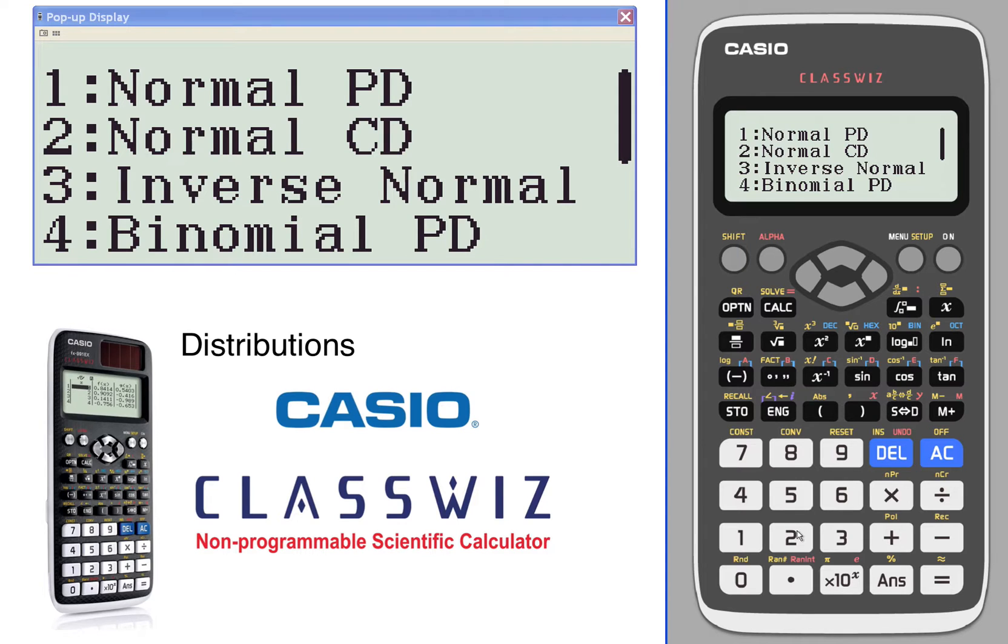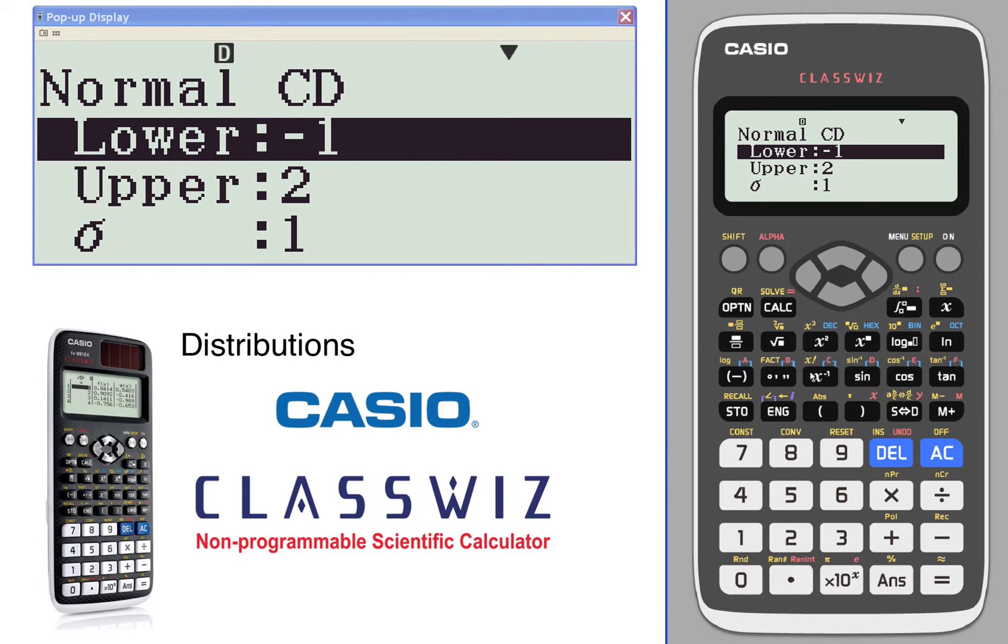Let's go back and do a normal calculation, normal cumulative density. We're going to look for the area between two values, lower value of negative one, upper value of two.